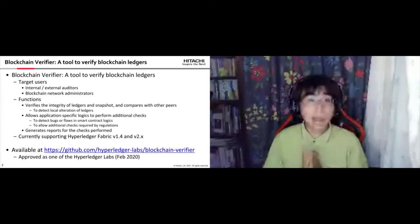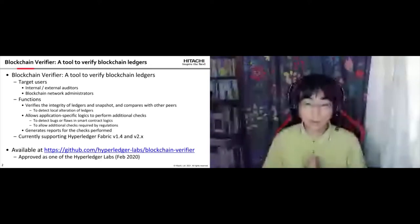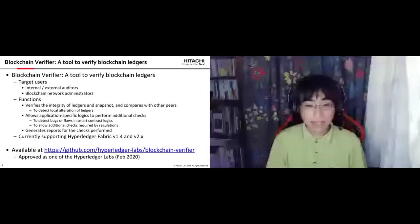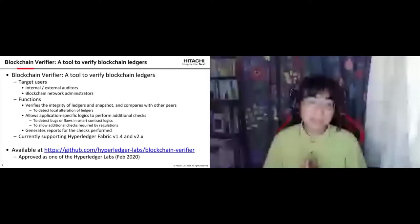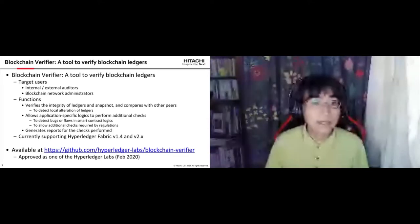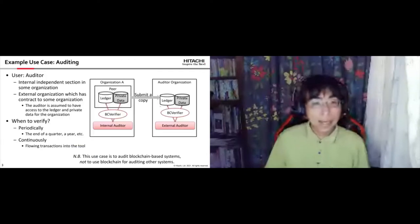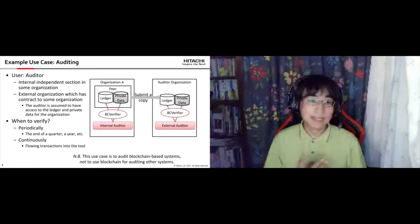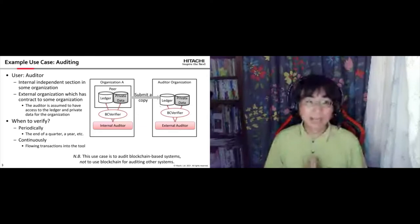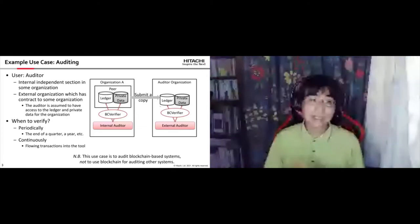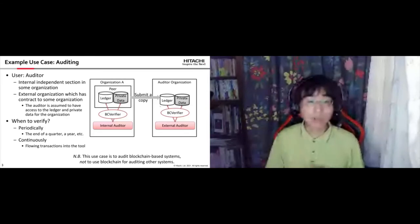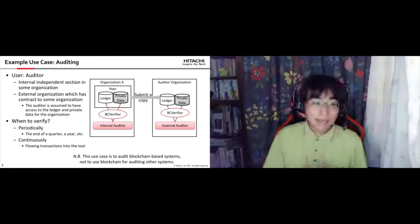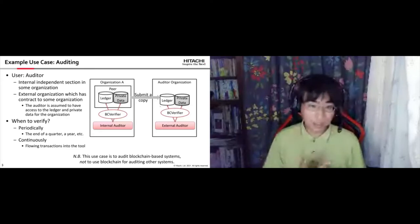Currently this tool supports Hyperledger Fabric version 1.4 and version 2.x. It is approved as a Hyperledger Lab and available at the listed URL. In the auditing scenario, the auditor can be internal — meaning they are in an independent section inside an organization — or external, meaning they are in an external organization with some contract with a particular organization participating in the blockchain network. They can perform checks using this Blockchain Verifier.